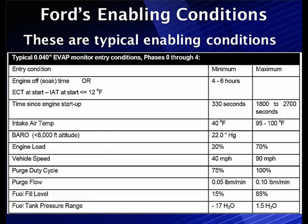Fuel tank pressure can't be more than minus 17 inches of water vacuum to start with — that's less than half a PSI. Typically not above 1.5 inches of water pressure. These are the enabling conditions that must be met before we're allowed to run the EVAP test. Remember, the EVAP test has nothing to do with normal purge — this is testing for leaks. Two completely different functions.